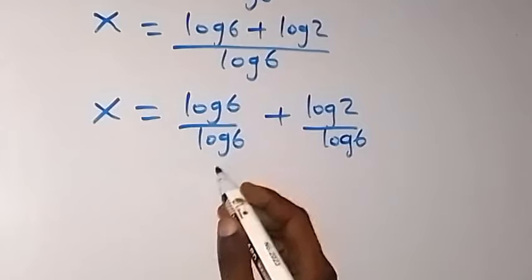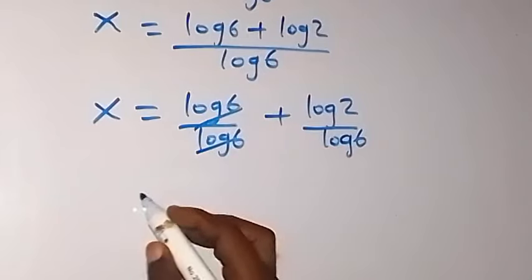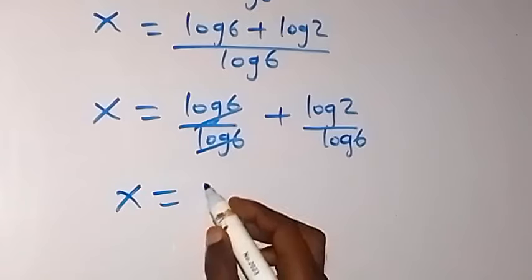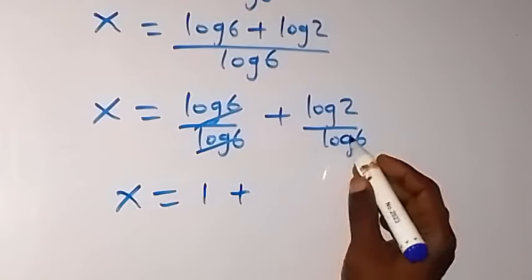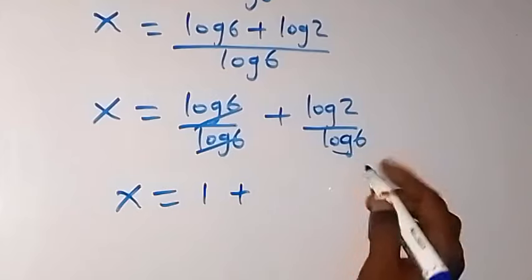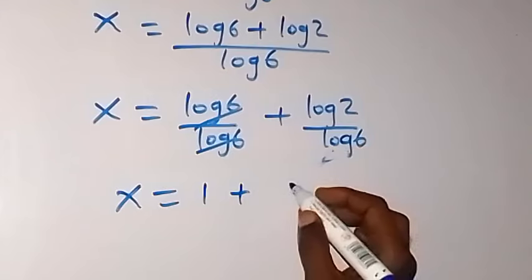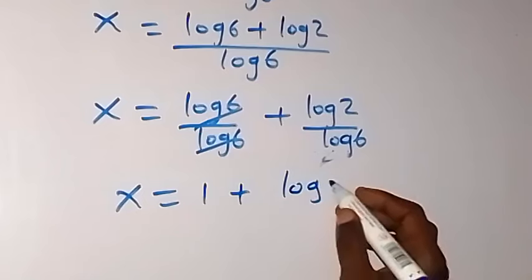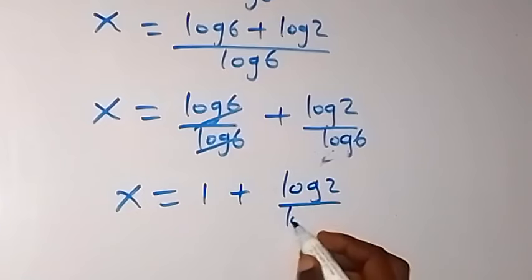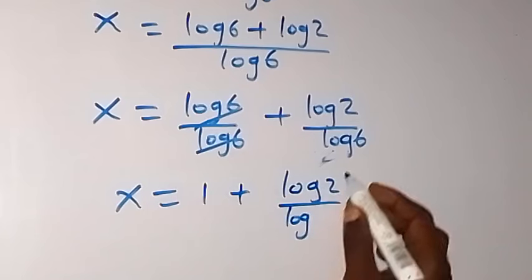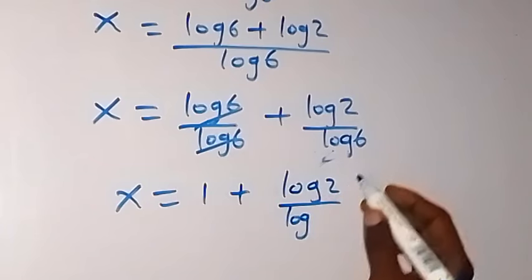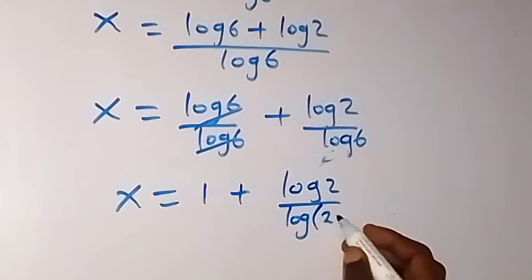The first fraction cancels to 1, so we have x equals 1 plus log 2 over log 6. We can simplify further by writing log 6 as log of 2 times 3.